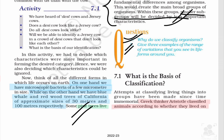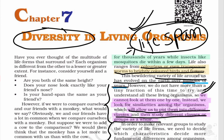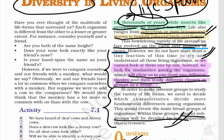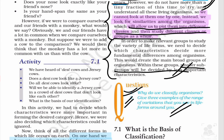Three ranges of variation: पहला variation in size — bacteria छोटा है और blue whale और redwood trees काफी बड़े। दूसरा variation in life span — pine trees that live for thousands of years and mosquitoes which die within few days। तीसरा variation in color — some organisms are colorless or transparent, and some like birds and flowers are very brightly colored। ये तीन examples हैं range of variation के।